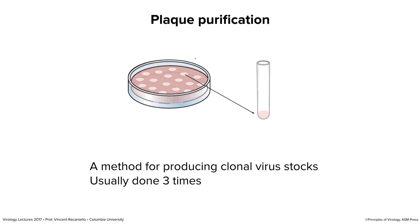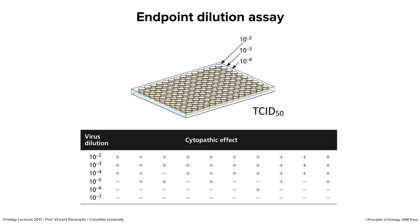The plaque assay is also useful for plaque purification — you do a plaque assay, then pick a single plaque by plunging a pipette into the agar over the plaque. That little agar plug has virus in it, and it's the progeny of a single infected cell, so it's somewhat genetically purified compared to the original stock. For example, if you took a nasal wash from a patient with influenza and plaqued it out, you could pick a single plaque and have a relatively genetically pure culture. We usually do this three times — pick a plaque, grow it up, do another plaque assay, pick another plaque — to make a clonal virus stock.